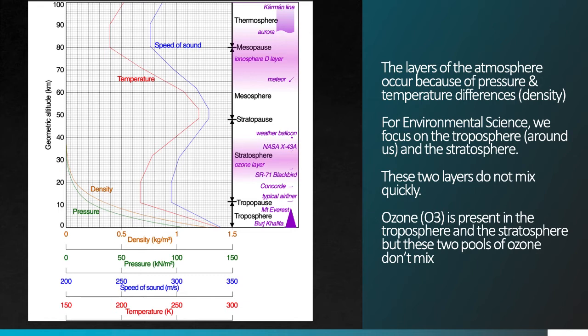The top of the troposphere is somewhere around or just past the top of Mount Everest, and above this we transition into the stratosphere. Airplanes, for example, travel just at the bottom of the stratosphere. The reason they do this is that there's far less mixing of the atmosphere once you go past the tropopause — on an airplane you'd call this turbulence. There's far more turbulence in the well-mixed air masses of the troposphere than in the relatively calm and somewhat distinct layer of the stratosphere.